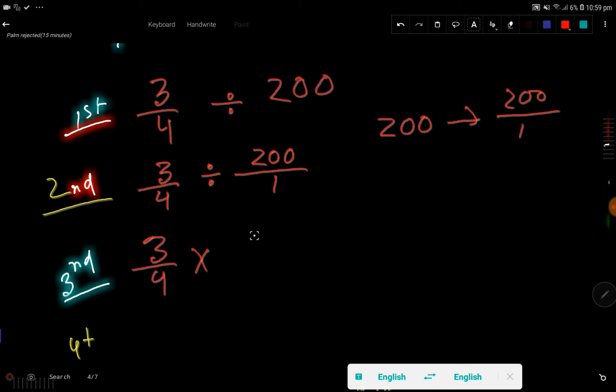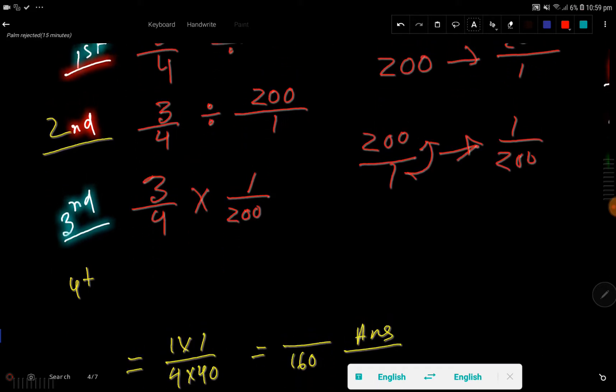The reciprocal fraction of this fraction is 1 over 200. Just you need to change the position of numerator and denominator, right? Reciprocal fraction, right.